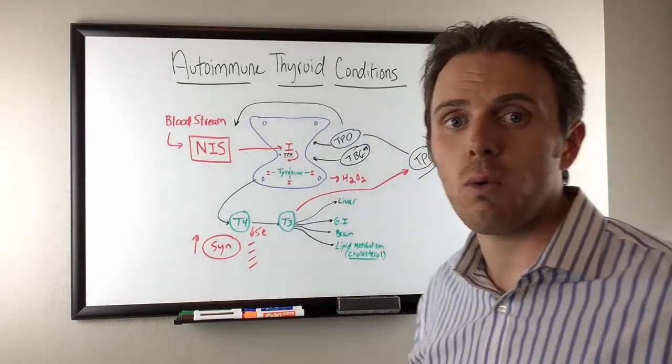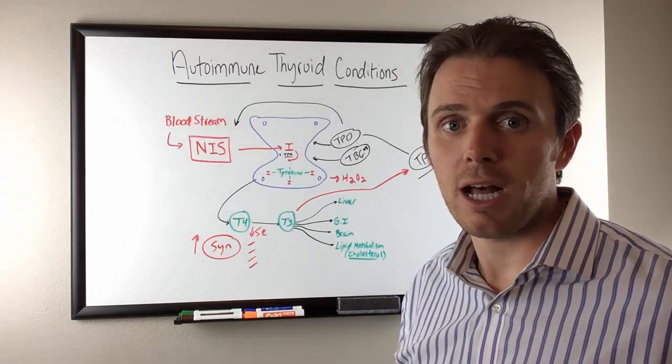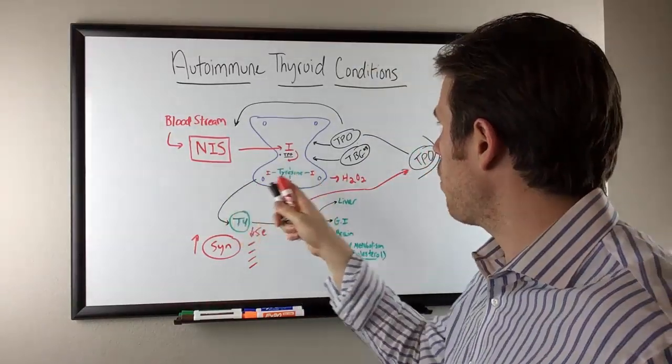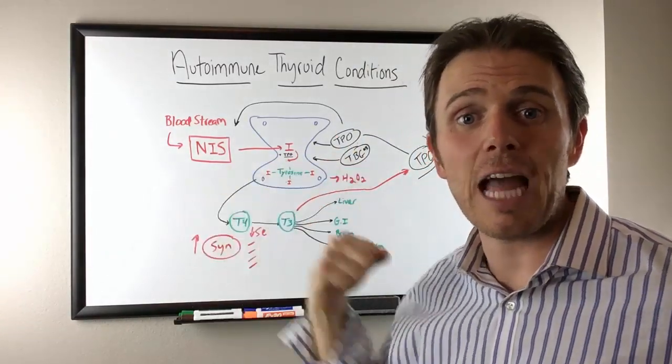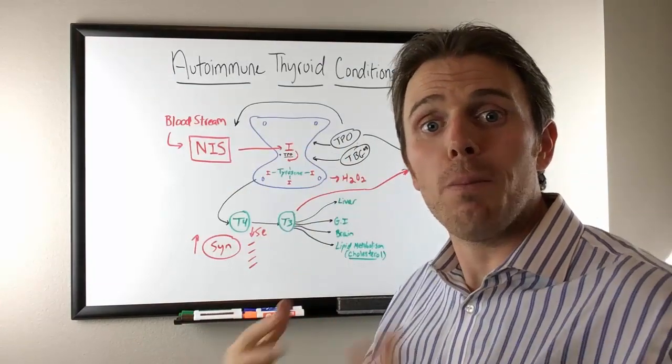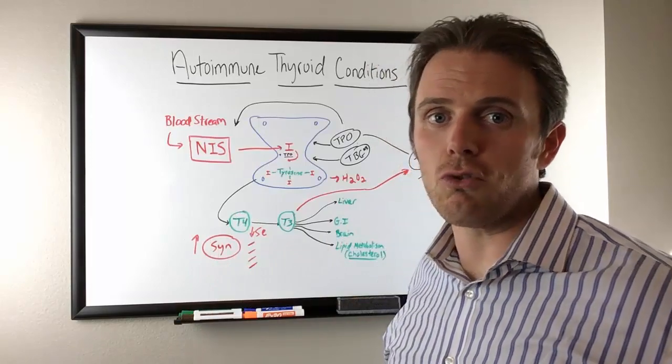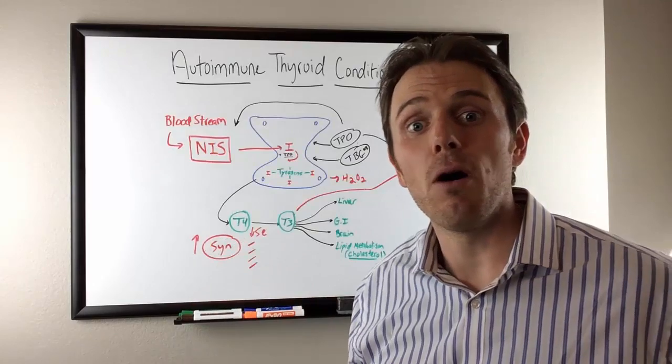When we're dealing with autoimmune thyroid conditions, especially Hashimoto's, it can be a little bit more complex. Hashimoto's in the beginning can feel more like a hyper type of attack because we're spilling out all these thyroid hormones because our TPO and TAG are coming in there and attacking it. So that hormone output in the beginning can feel like a hyper attack, but in the long run it can drop. You may feel hyper in the beginning and then eventually go hypo.